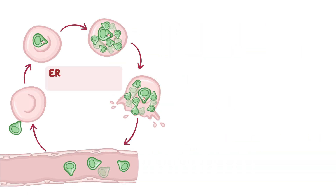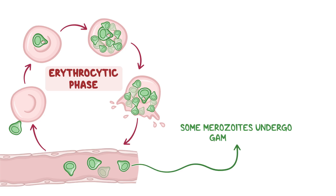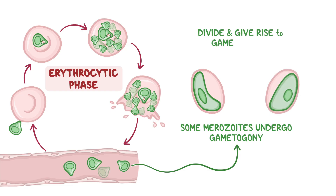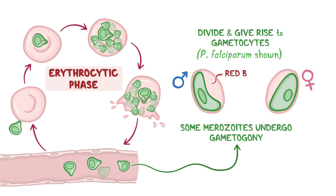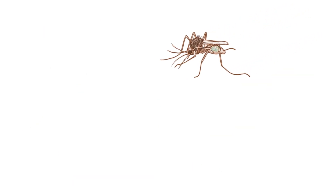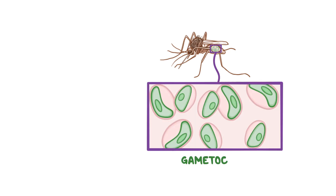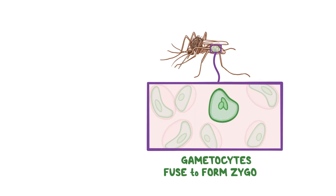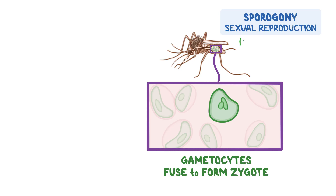Now, instead of going into the erythrocytic phase again, some of the merozoites undergo gametogony, which is where they divide and give rise to gametocytes, which are little sausage-shaped sexual forms that can be either male or female. These gametocytes remain inside the red blood cell, and can get sucked up by another female mosquito that bites the same malaria carrier. The gametocytes can then fuse together inside the mosquito to form a zygote. This part of the plasmodium life cycle is called sporogony, and that is sexual reproduction, as opposed to the schizogony, or asexual reproduction that happened in the liver and in the red blood cells.